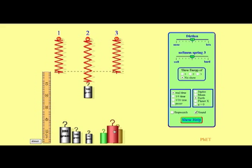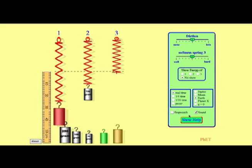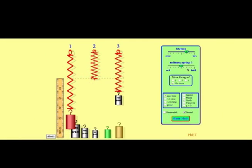You can ask them to find the mass of the red object. You also can change the friction of the springs, and then you can change only the softness of spring 3.